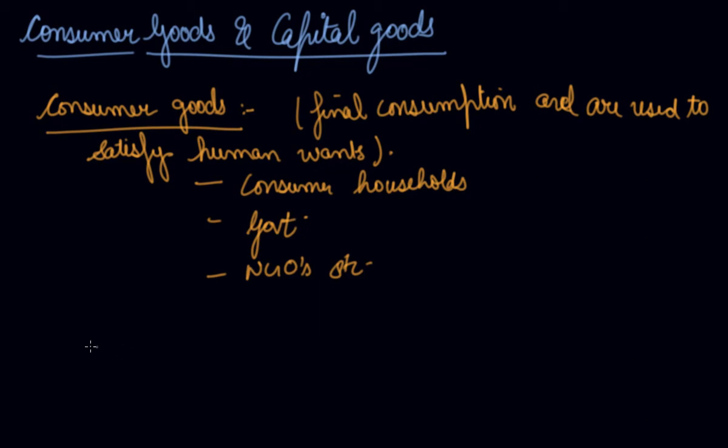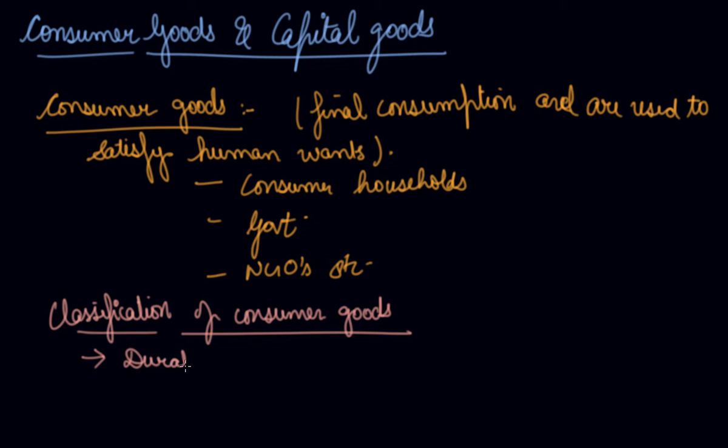There are further classification of consumer goods. Number one is durable goods. Durable goods are the goods that are used for several years, like your car, refrigerator, furniture.